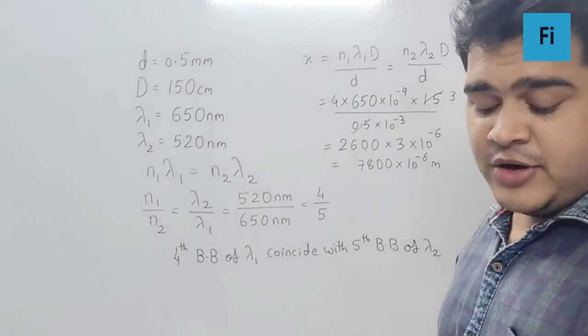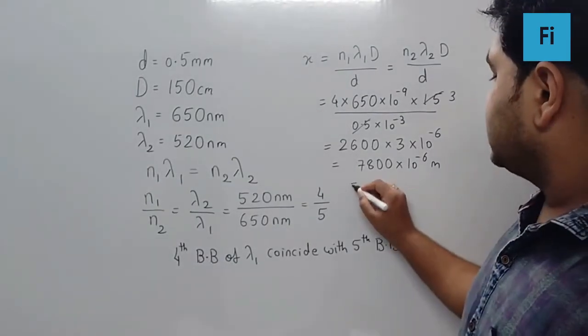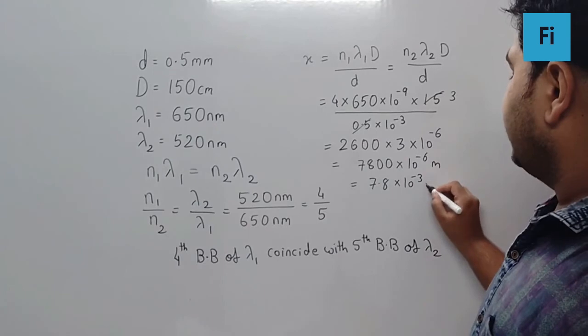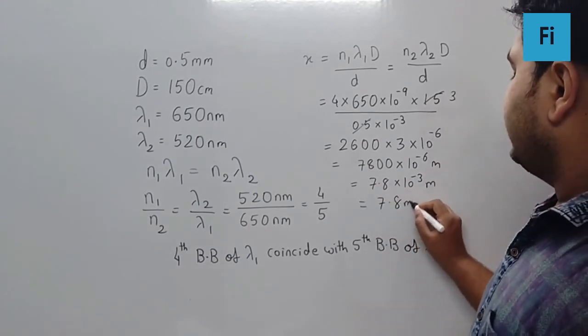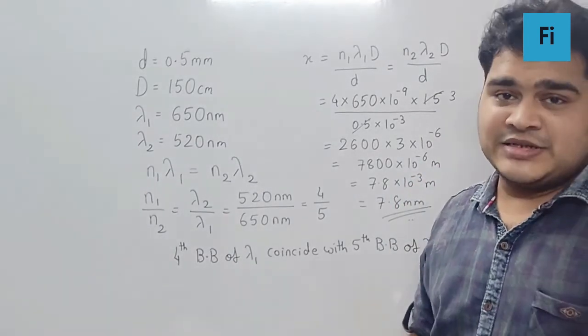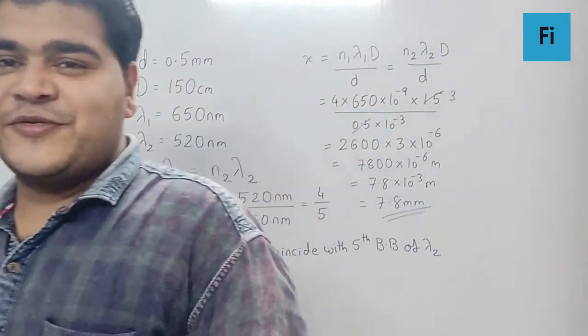Now, as per the given option, definitely we can just shift the decimal and write 7.8 into 10 raise to minus 3 meter or 7.8 millimeter. Yes guys, and that is going to be your final answer. So please, copy this carefully.